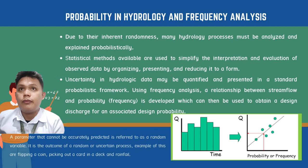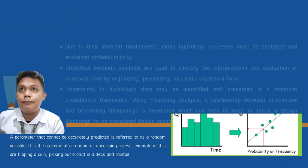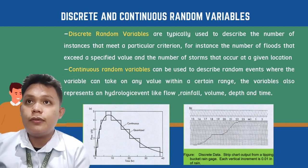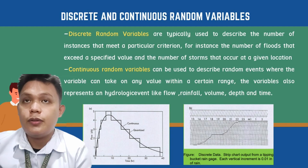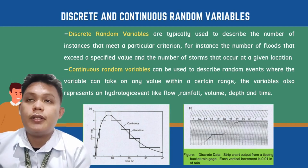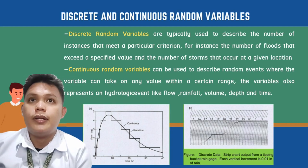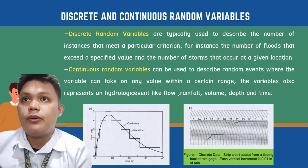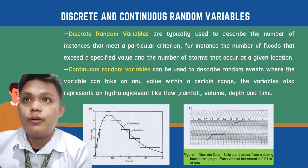Examples of random variables include flipping a coin, winning a lottery, drawing a card from a deck, and rainfall. These variables can be statistically categorized as either discrete or continuous. Discrete random variables describe the number of instances meeting a criterion, such as the number of floods exceeding a specified value. Continuous random variables can take any value within a range, representing hydrologic events like flow, rainfall, volume, depth, and time.